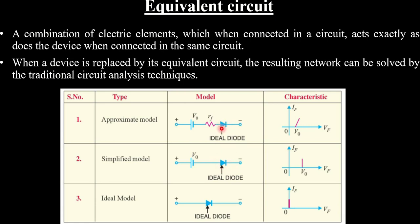In the simplified model, we assume the forward resistance is zero but retain the knee voltage V0 as a potential drop across the p-n junction. In the ideal model, if the applied voltage is very much greater than the internal drops, both the forward resistance and the knee voltage can be neglected, and the diode acts like a conductor with zero resistance — no voltage drop across it.